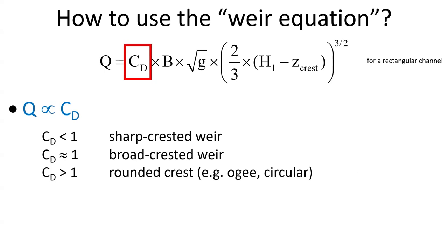Thirdly, the discharge is proportional to the discharge coefficient Cd, a dimensionless coefficient equal to unity for a broad-crested weir, less than 1 for a sharp-crested weir, and greater than 1 for a rounded crest, such as an ogee crest or a circular crest.